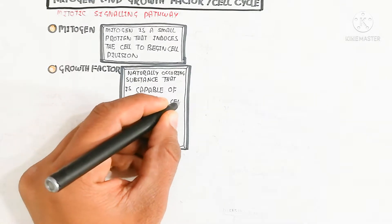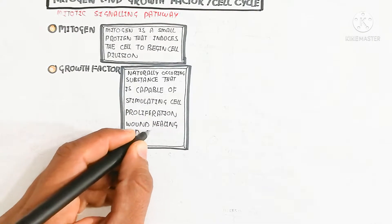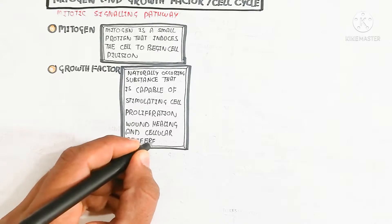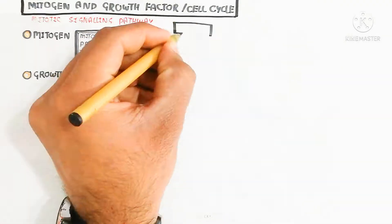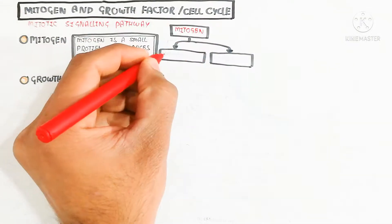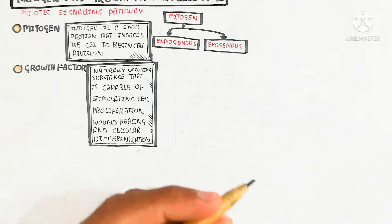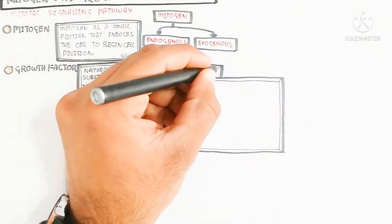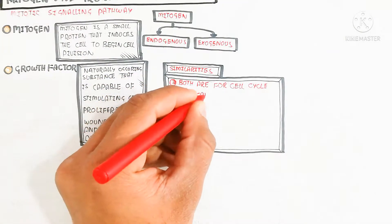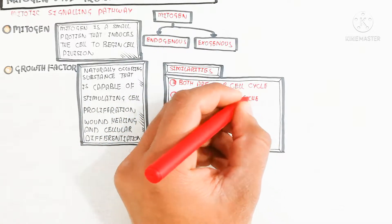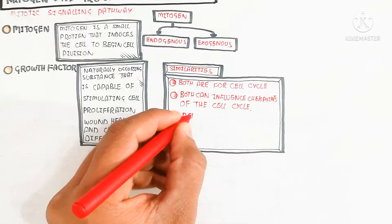If we discuss similarities: the mitogen can be endogenous or exogenous. Endogenous means within the cell, stimulating cell division, while exogenous means an external factor binds with the receptor to trigger cell division, or directly enters the DNA as a steroid — for example, testosterone. Both are used for the cell cycle, both can influence checkpoints of the cell cycle, and deregulation of both can cause cancer.